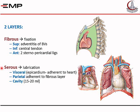The serous pericardium is made of two layers. A visceral layer called the epicardium, which is adherent to the surface of the heart and is considered as part of the heart. And a parietal layer that is adherent to the fibrous layer and is considered as part of the fibrous pericardium. The cavity between the two layers accommodates very little serous fluid, about 15 to 20 ml.